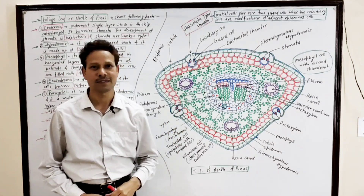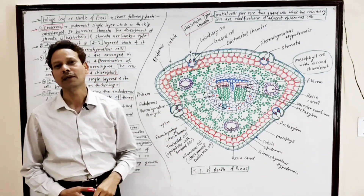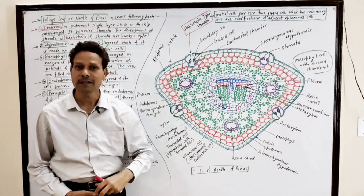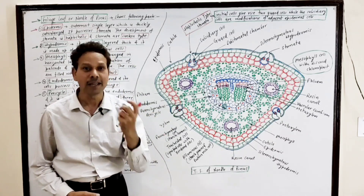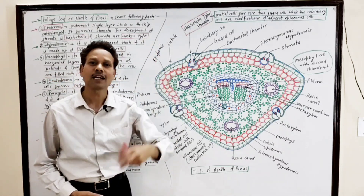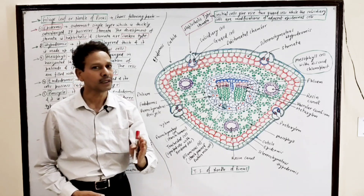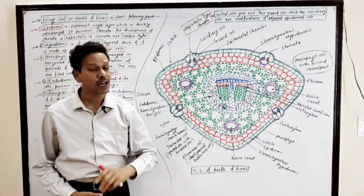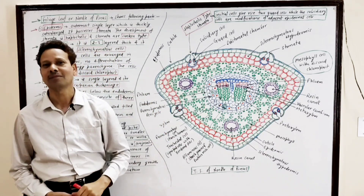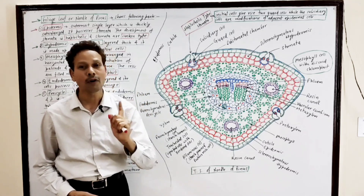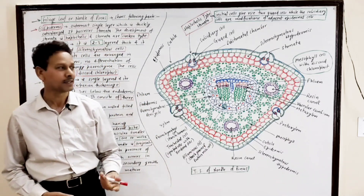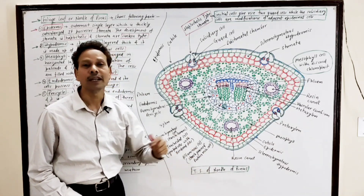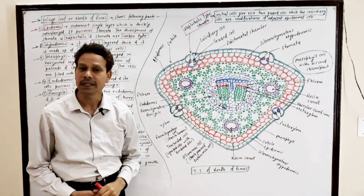In case of Pinus, the green photosynthetic leaves are needle-like. That's why the plant Pinus is known for having needle-like leaves. In our last lectures we covered the structure of Pinus root and Pinus stem. In this lecture I will cover the foliose leaf or needle of Pinus. This diagram shows a transverse section of the needle of Pinus, which is the foliose leaf.